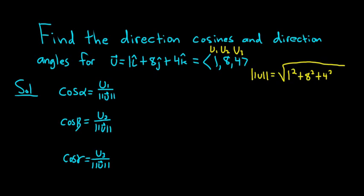I have not done this problem before so I'm going to type it into my calculator very carefully. 1 plus 8 squared is 64 and 4 squared is 16. Okay, I got 81. That's really nice. Square root of 81 equals 9. Beautiful.